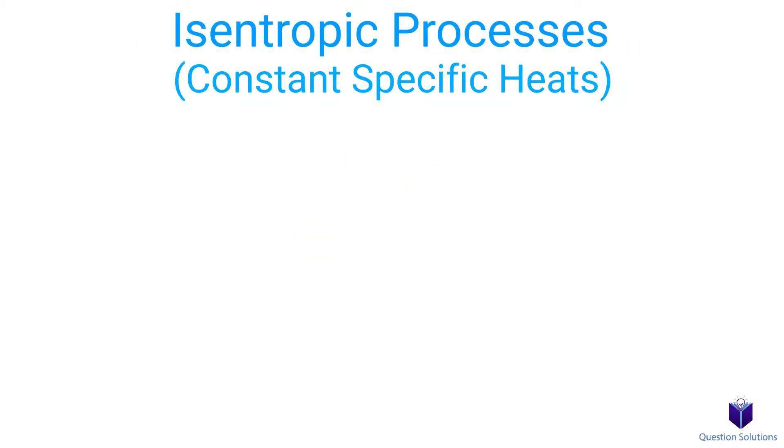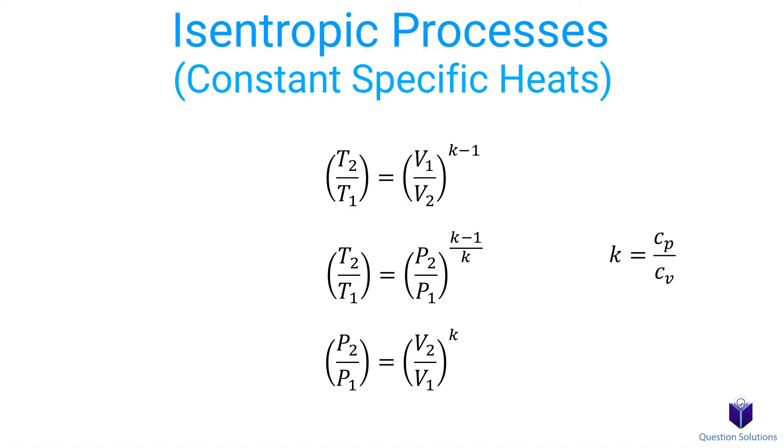In that case, the equations you'll need for the first method are these. The first equation relates temperature and volume. The second relates temperature and pressure, and the last relates pressure and volume. The K value, called the specific heat ratio, is just Cp divided by Cv, and they are also tabulated on charts as well. You must remember that these equations work only for ideal gases during an isentropic process.